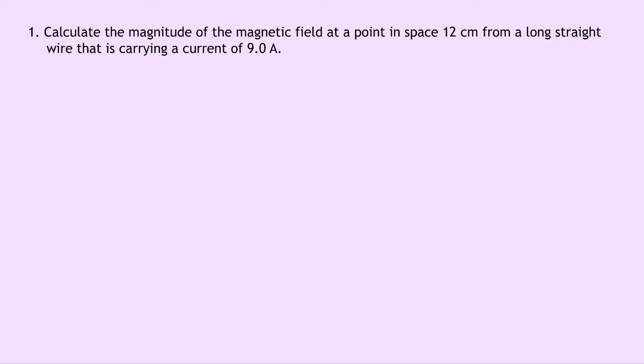So let's get started. Question 1 says to calculate the magnitude of the magnetic field at a point in space 12 cm from a long straight wire that is carrying a current of 9.0 A.